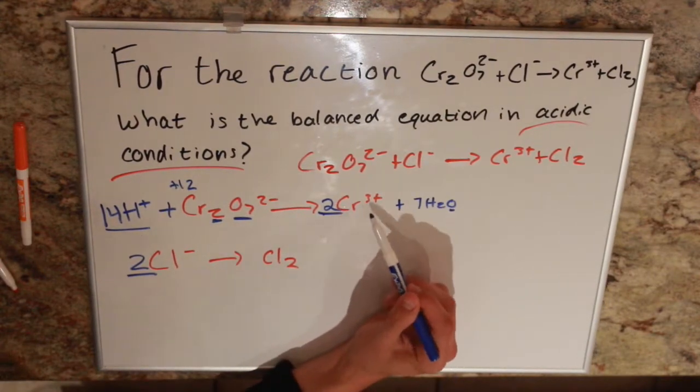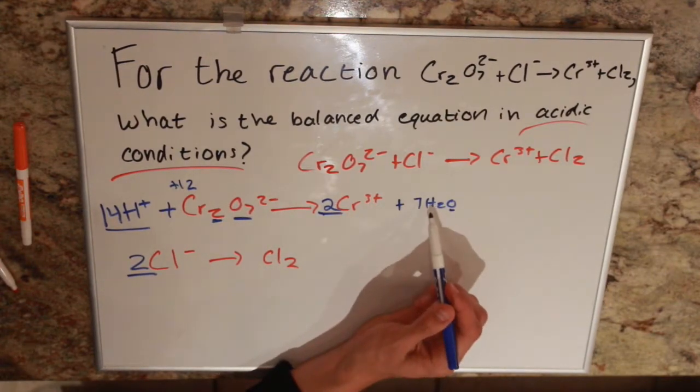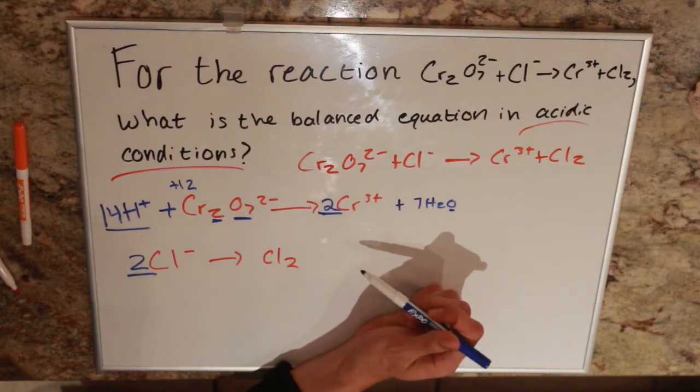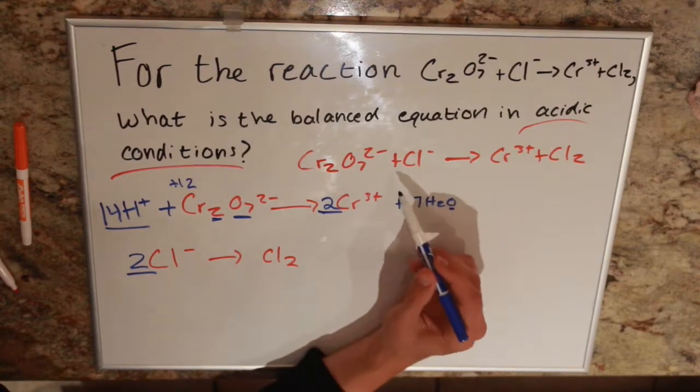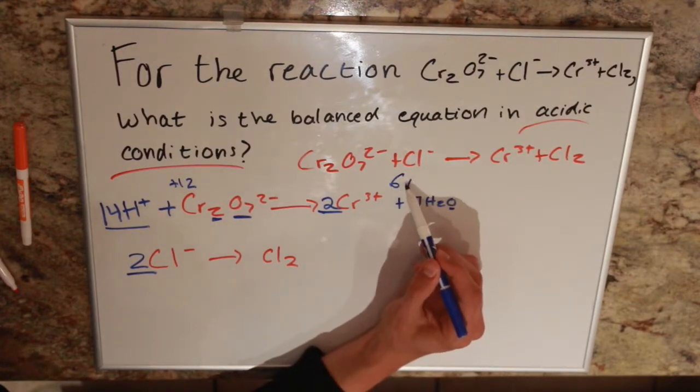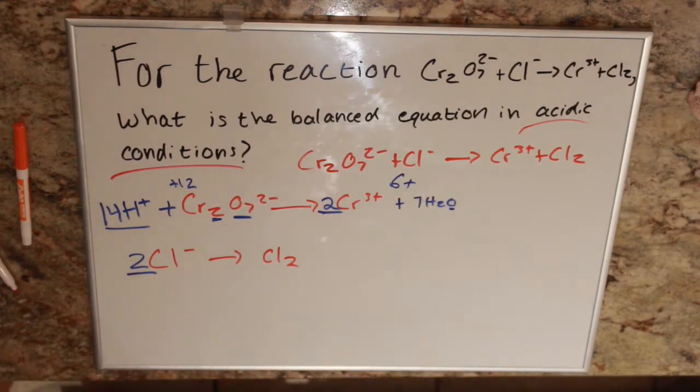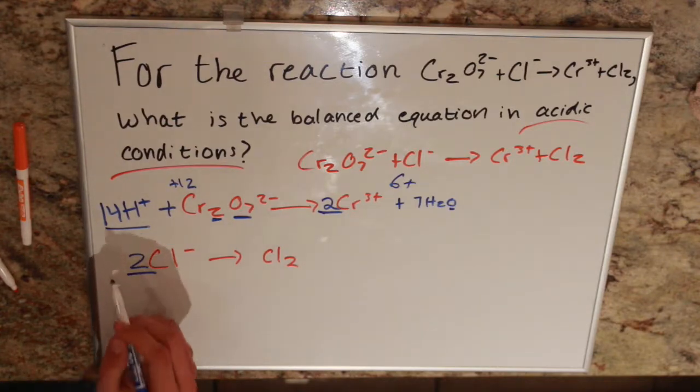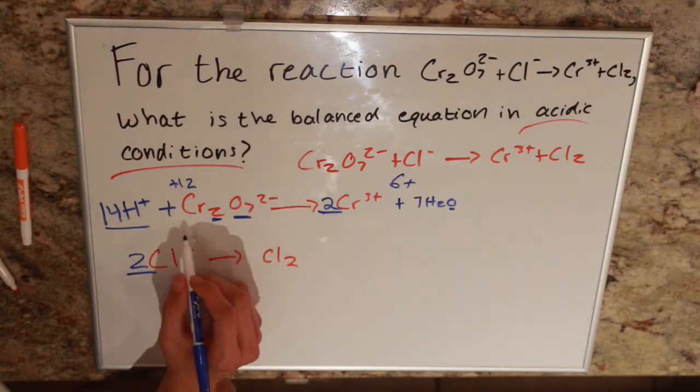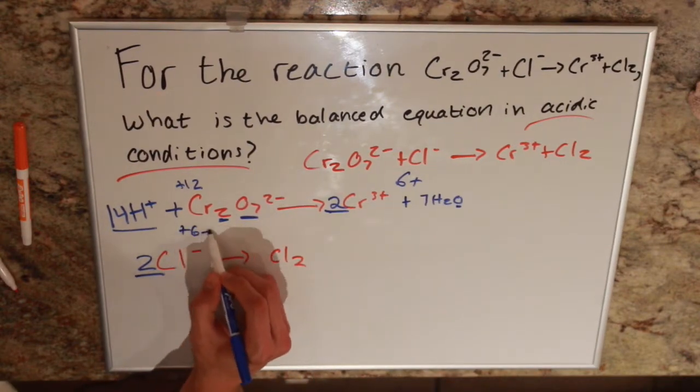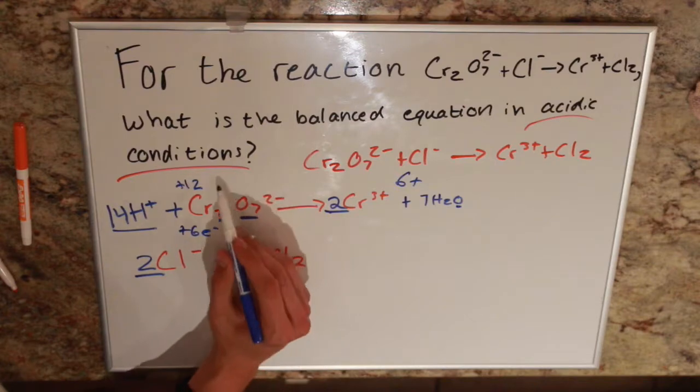And we go to this side we have 6+. So in this case we're going to have to add 6 electrons to this side so we can bring it down to a 6+.